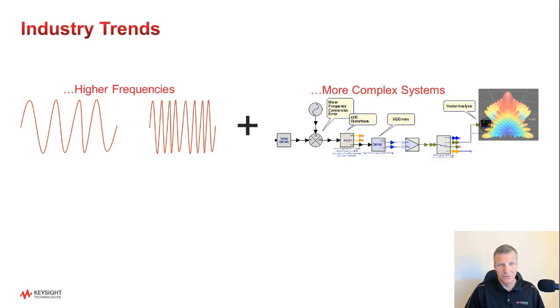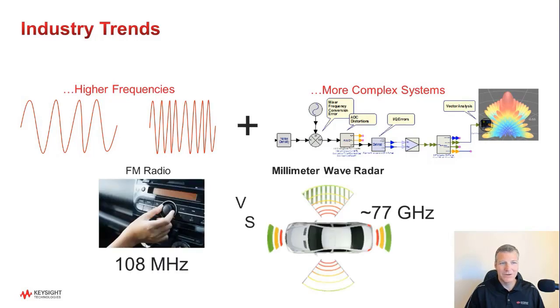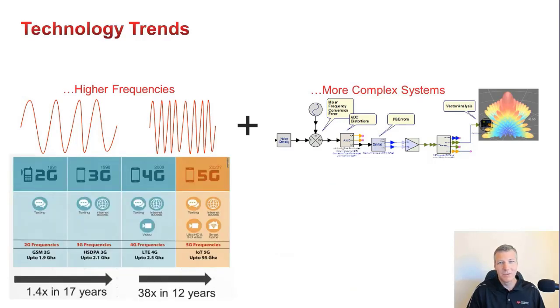Think about your car. A few years back, the highest frequency hardware might have been the FM radio. Now, most cars have some form of millimeter-wave radar sensors. In fact, many cars have entire networks of millimeter-wave electronics. How about commercial cellular? Well, if you look back from 2G to 4G, frequency increased only modestly. It increased about 1.4 times in 17 years. That's not too bad, but when we go from 4G to 5G, frequencies will increase 38 times in just 12 years between standards. So the rate of increase is accelerating.